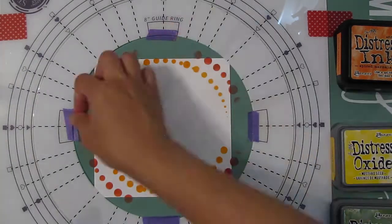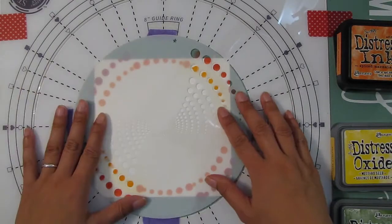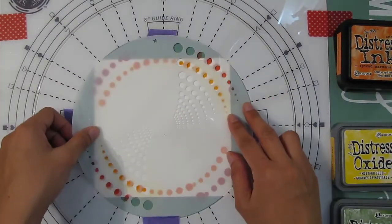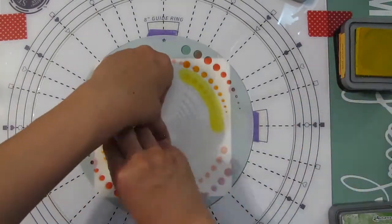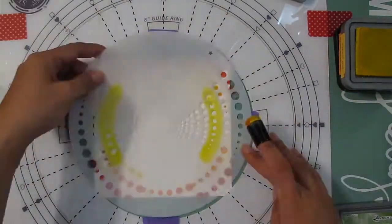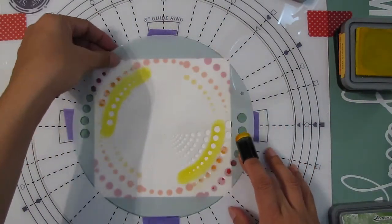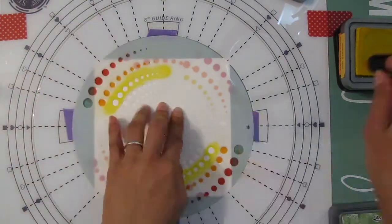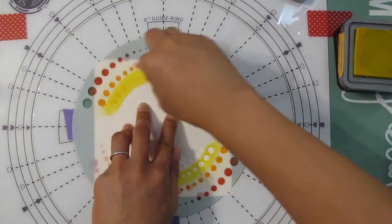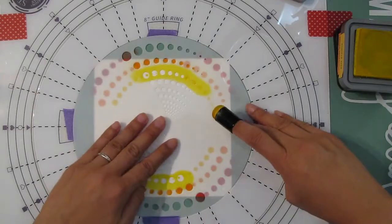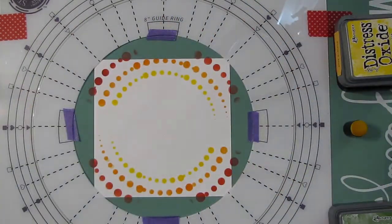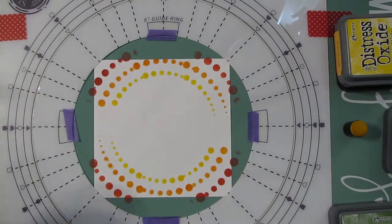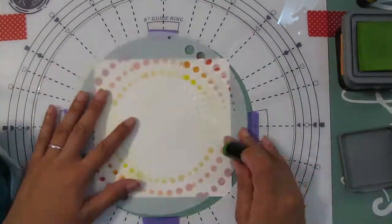The first outer color is Fired Brick in Distress Ink. I find that Distress Ink is a lot more darker and richer compared to the Oxide ink for that particular color. The second color, the orange, is Spiced Marmalade in Distress Ink, and then the yellow is a Distress Oxide ink and that one is Mustard Seed.